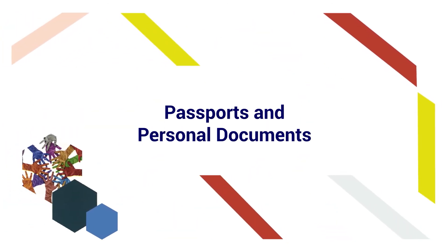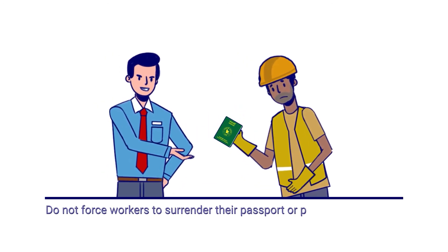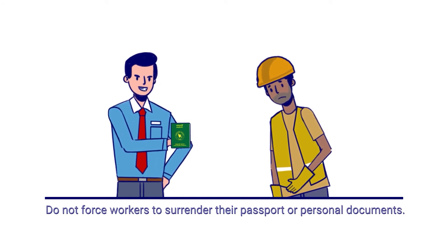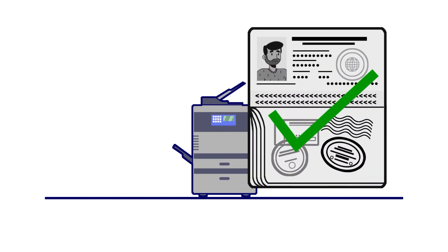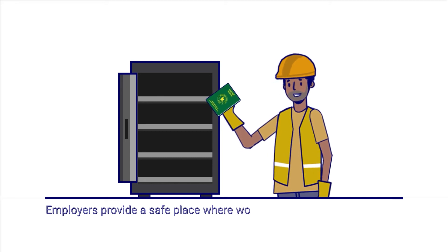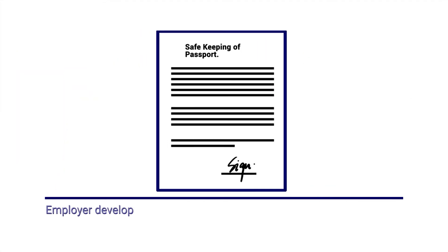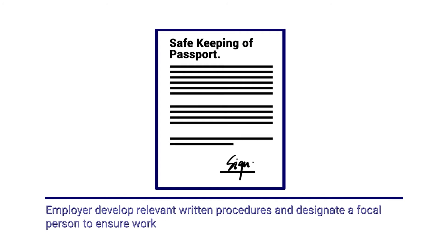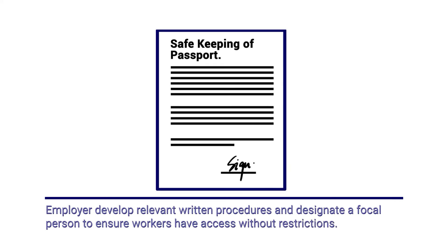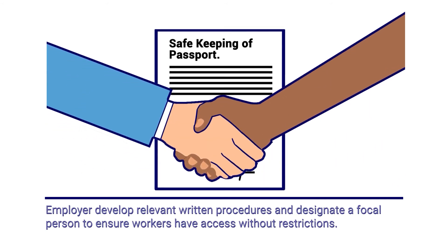Passports and personal documents. Do not force workers to surrender their passports or personal documents, as such practices are prohibited under the Passport Act 1966. Employers should keep only copies of a worker's passport and work permits. Employers should provide a safe place where workers can keep their passports and personal documents. If migrant workers specifically request the employer to keep their documents, the employer should develop relevant written procedures and designate a focal person to ensure workers have access to the documents without restrictions.